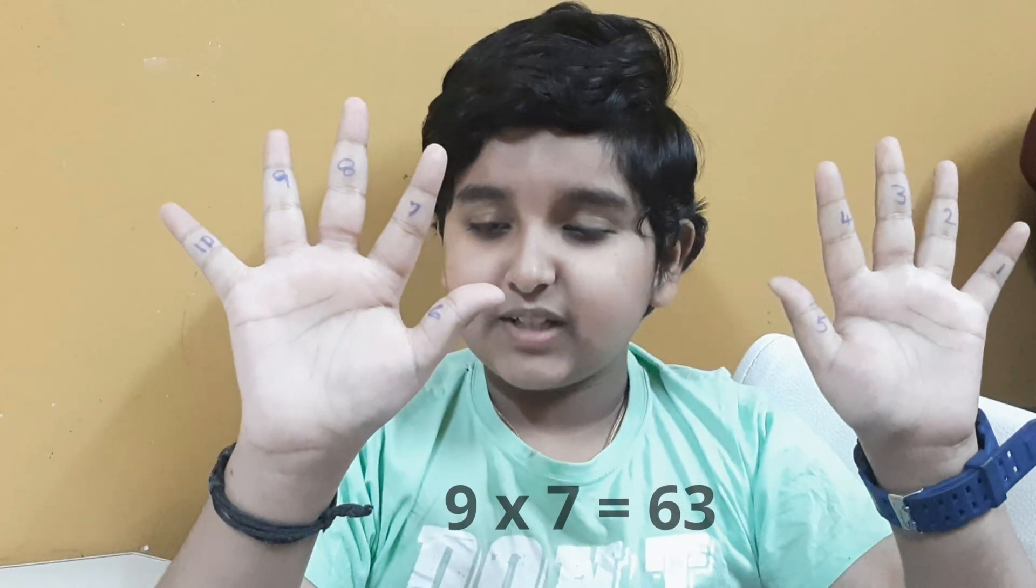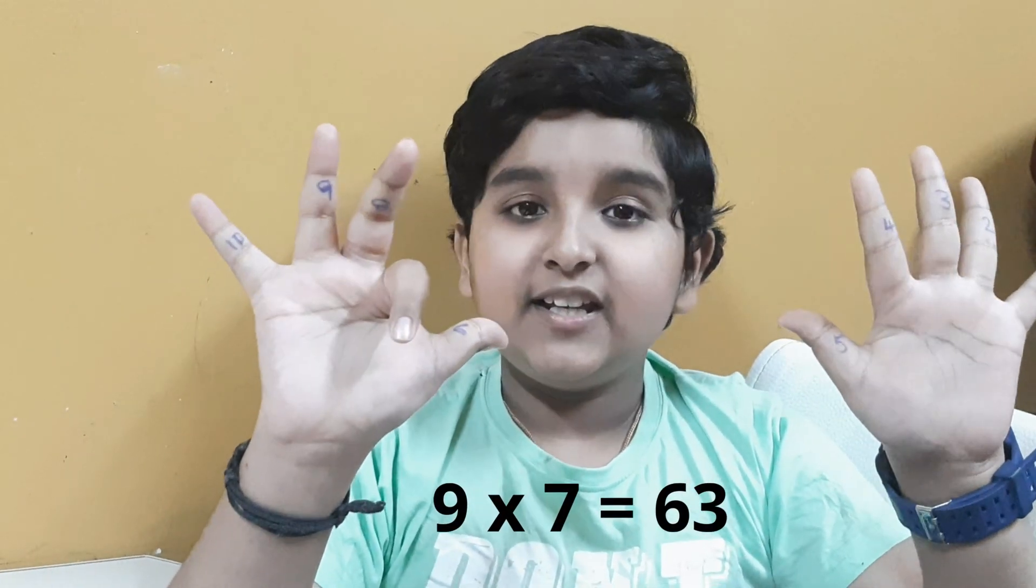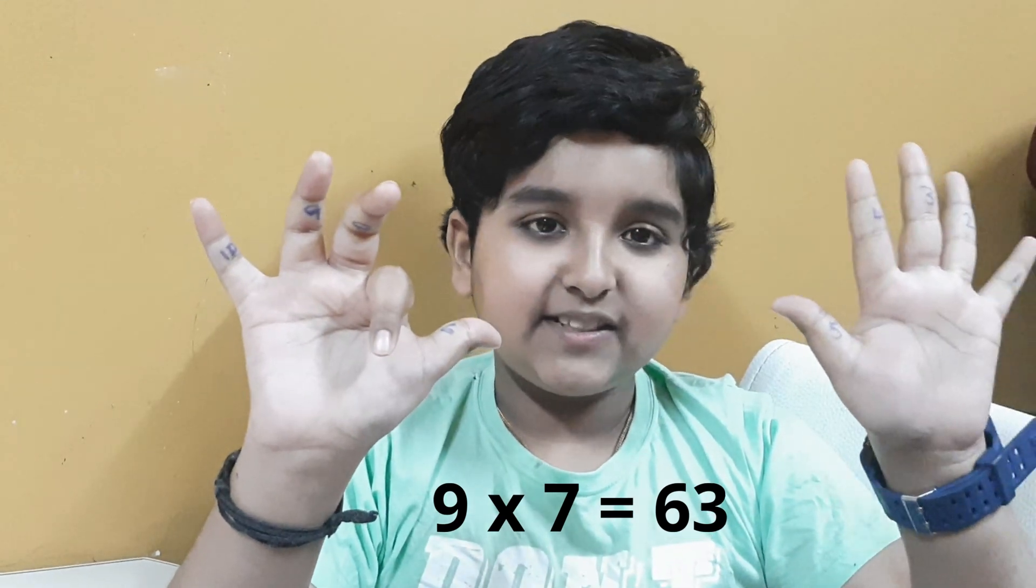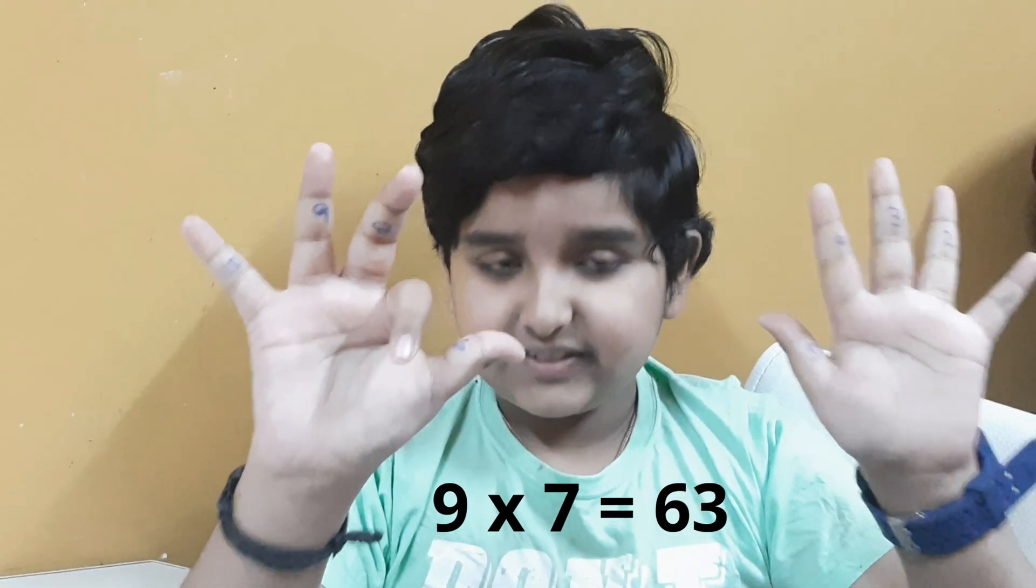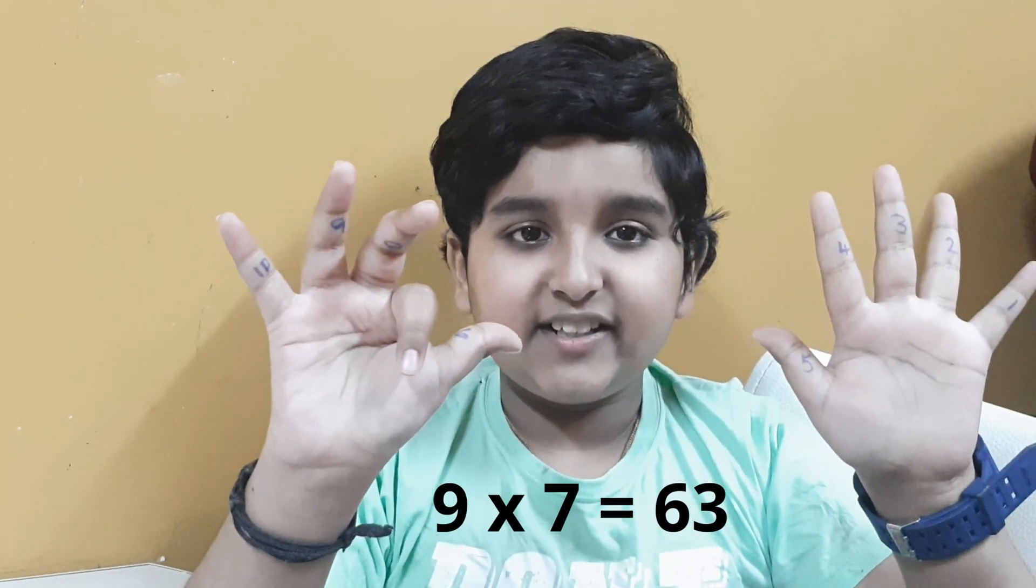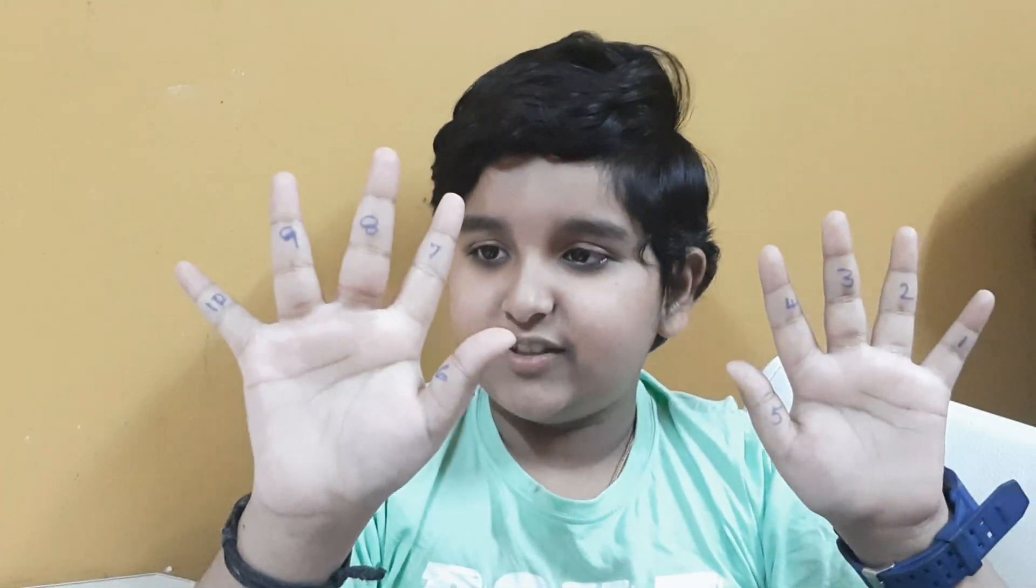Next we are going to do 9×7. We have to close the seventh finger. How many remains? Over here 6, here 3. So the answer for 9×7 is 63.